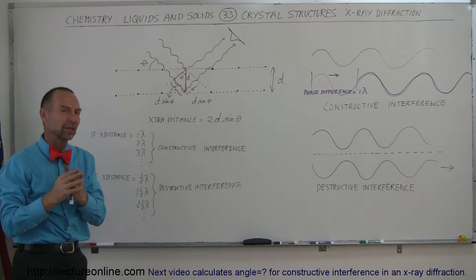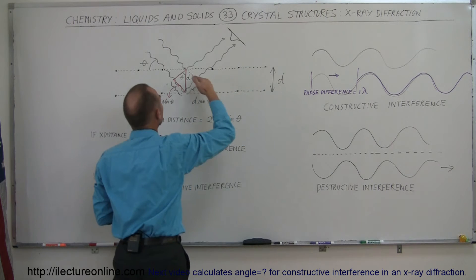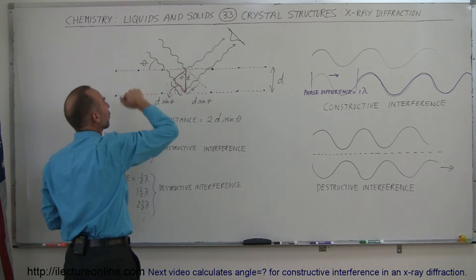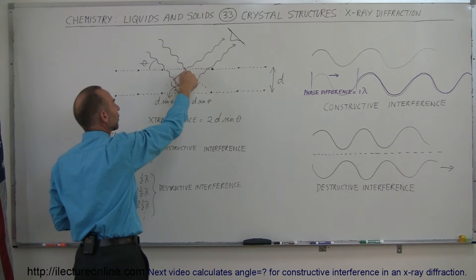Now, how do we find out what that extra distance is equal to? Well, if D is the separation distance right here, and theta is the angle of incidence relative to the horizontal, notice that this angle theta here is the same as this angle theta right there.